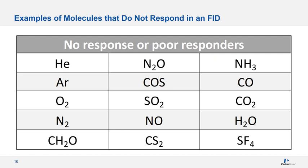Before leaving the FID, I would like to point out the effect of functional groups and other elements on the response. Since the response in FID is due to ionization potential in the hydrocarbon bond, electronegative elements in the molecule will reduce this energy, thereby decreasing the detector response. For example, oxygen on the molecule can reduce the response by 40%, and chlorine can reduce this response by 20%, depending on the component.